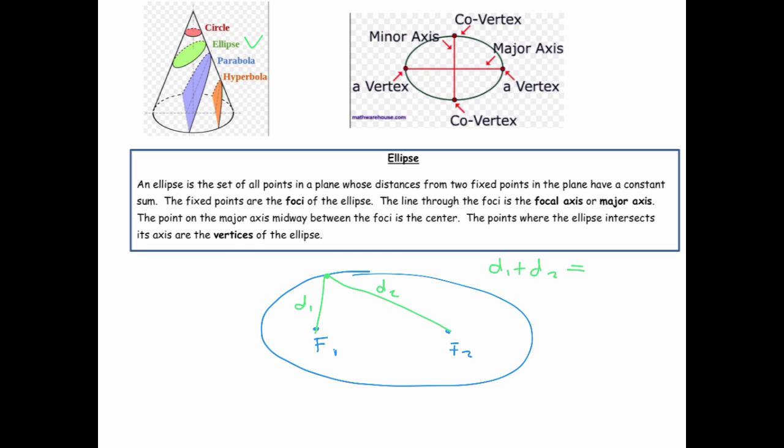Distance 1 plus distance 2 is going to be the same as when I pick a new point on the ellipse, like right here. Let's call this distance 3 and that distance 4.